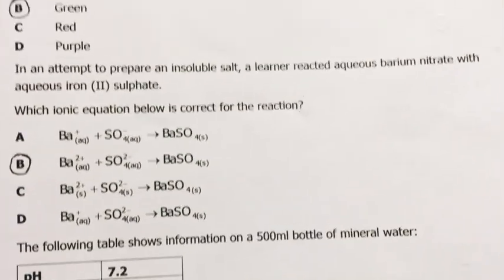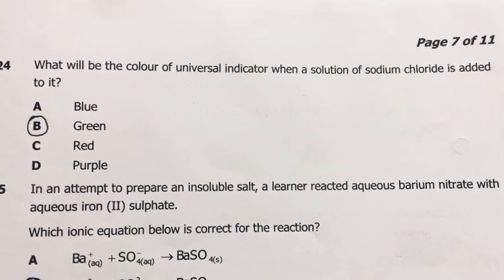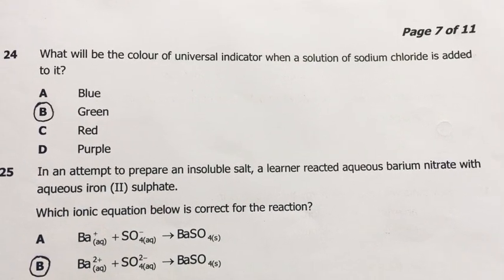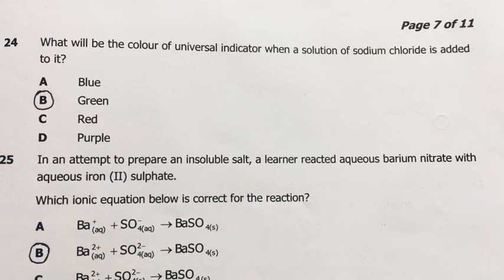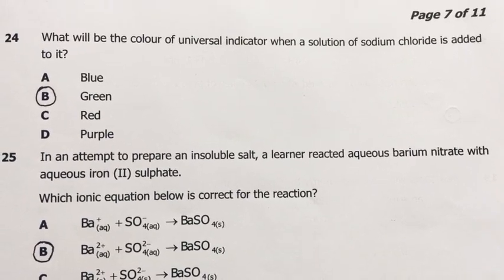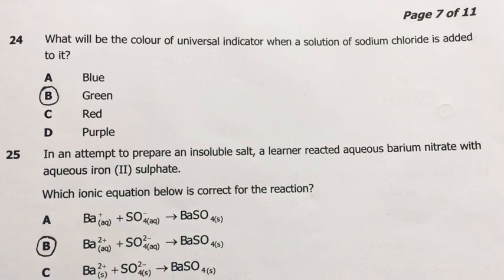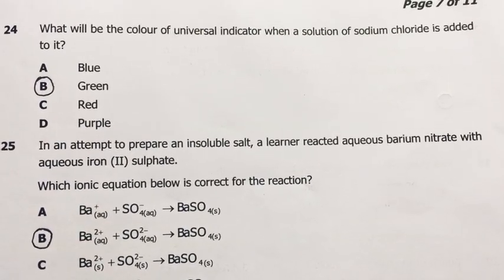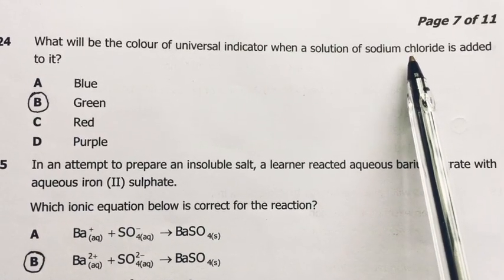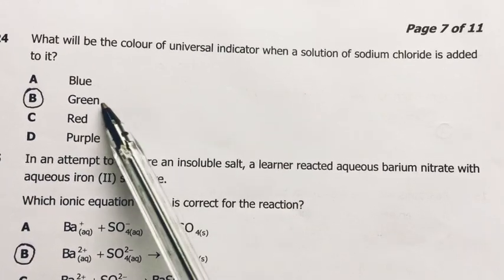Number 24. What would be the color of the universal indicator when a solution of sodium chloride is added to it? Universal indicator is green, and green shows that it's in neutral condition. It becomes red or pink, begins to get reddish when it's in acidic condition, and begins to get purple or bluish when it's in basic condition. And when you add sodium chloride, this is a neutral salt. No hydrogen protons produced, no hydroxide ions produced, therefore it will remain green.